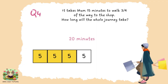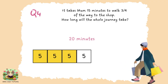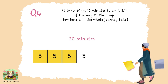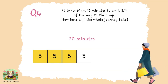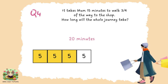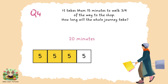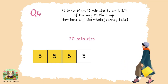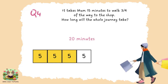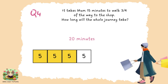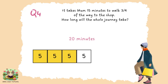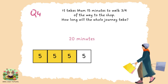Question four: it takes mum 15 minutes to walk three quarters of the way to the shop — how long will the whole journey take? I've used a bar model to help me. I drew a bar split into four equal parts because quarters is the denominator. She's walked three of those four parts, which adds up to 15, so each part is five minutes. The last part is also five minutes, so five times four equals 20. The whole journey took 20 minutes. Really well done if you managed to work that out — that was a tough one.